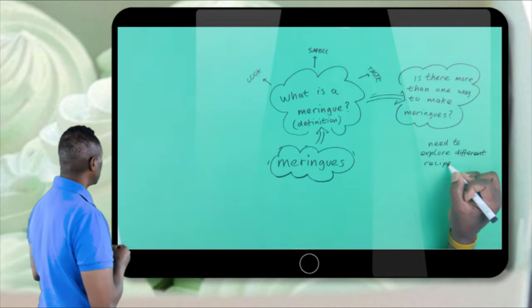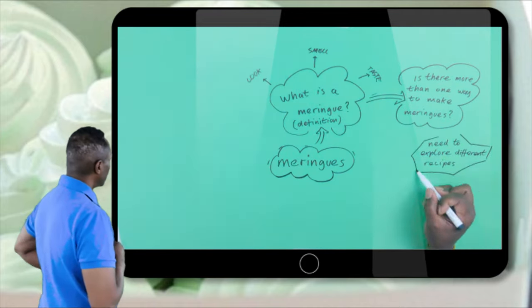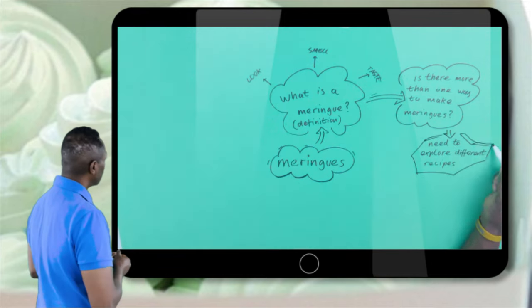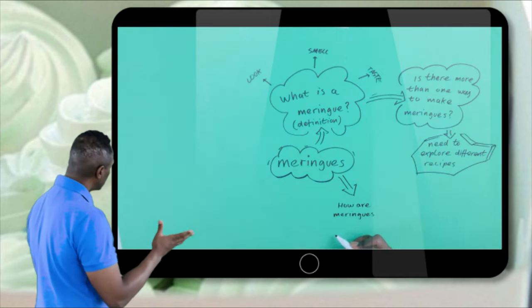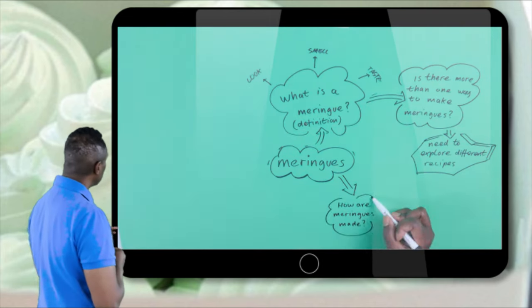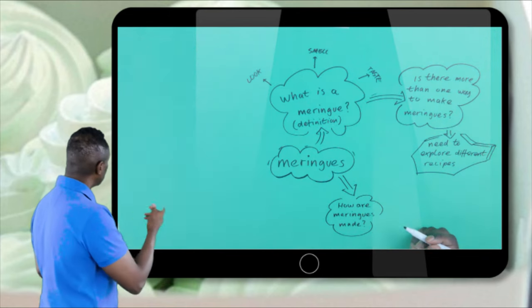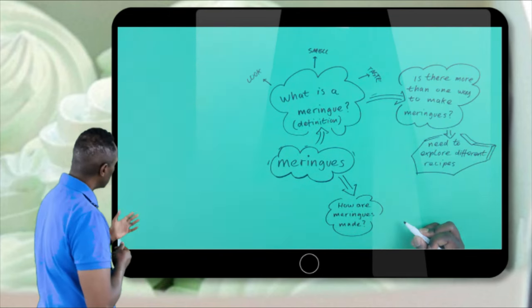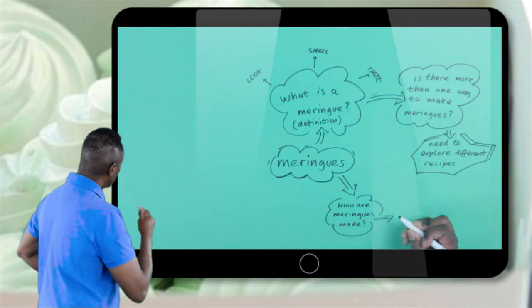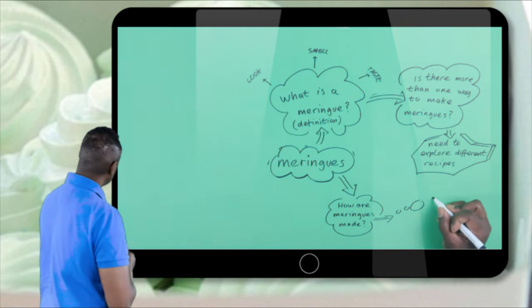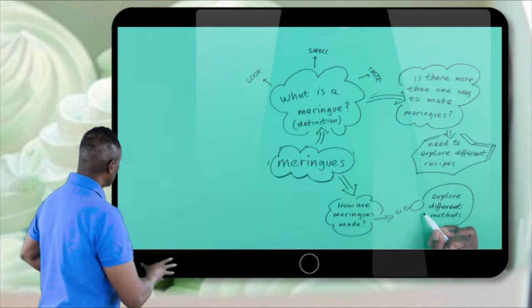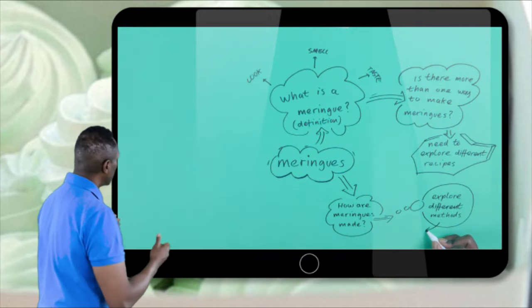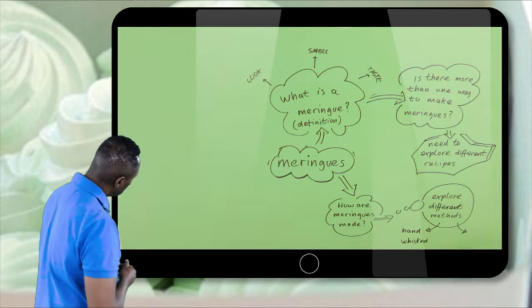When I'm exploring different recipes, I need to explore different ingredients in those recipes. How are meringues made? Explore different methods. Some recipes may suggest hand whisk, some recipes may suggest using an electric whisk, so I'm going to explore different methods.